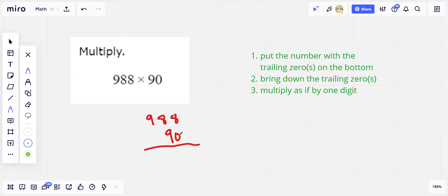And this zero from the 90 you can just bring it down and forget about it. So you've got your zero there as part of your answer and then go ahead and multiply this as if you're multiplying this one digit number 9 by this three digit number. So let's go ahead and do that.